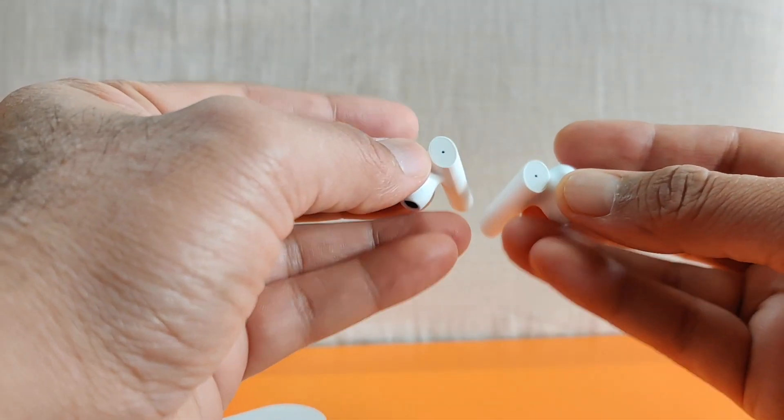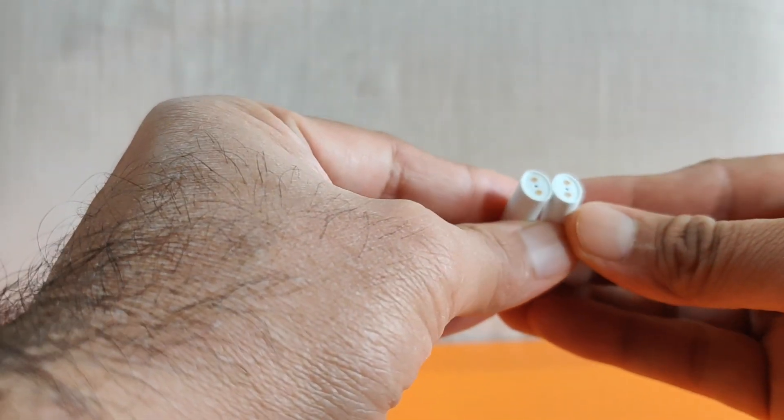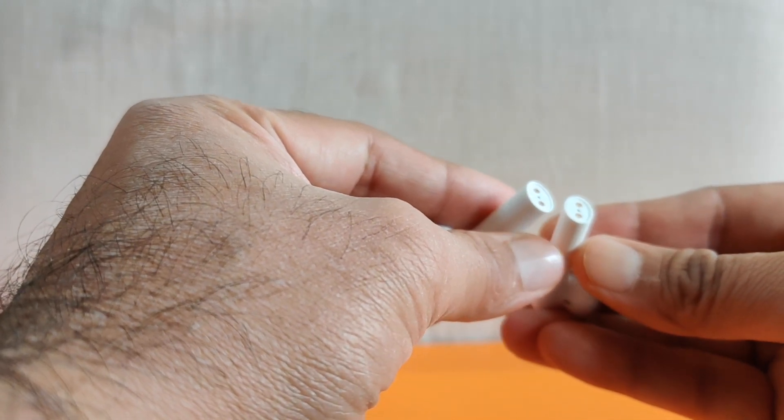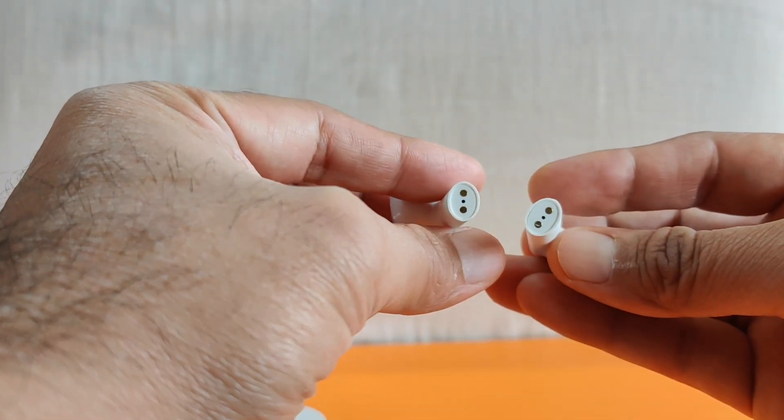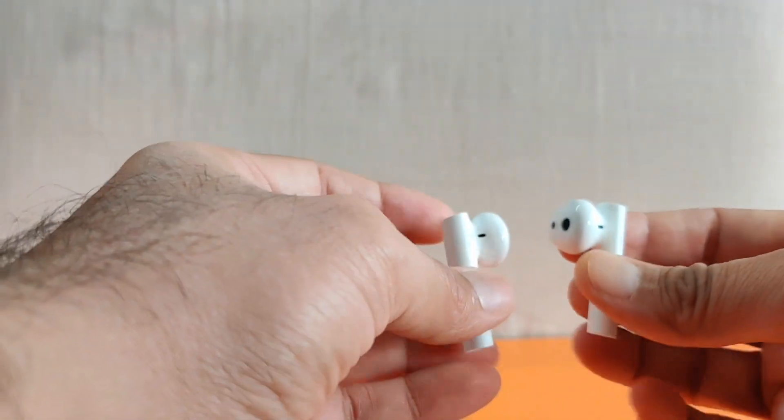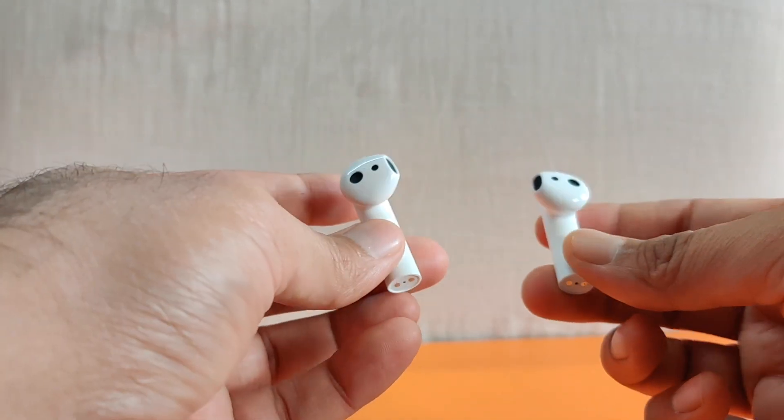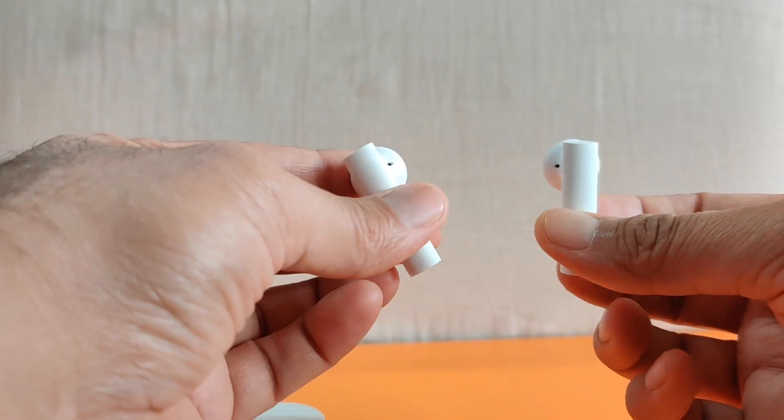These are microphone holes. And on the bottom you can also see two connectors and one hole. So the connectors are for charging. And the hole is microphone. So each of these earpods has two mics. One on top, one on bottom.